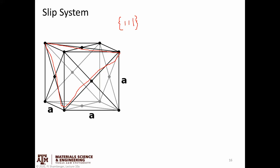The potential directions of motion are from one atom to the nearest neighbor — the <110> family of directions. This is the slip system in FCC: the system on which dislocation slip is easiest because it requires the least deformation of the crystal lattice.